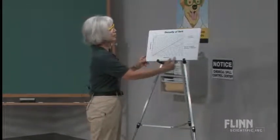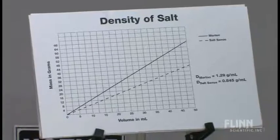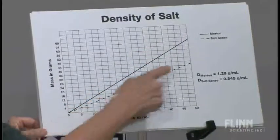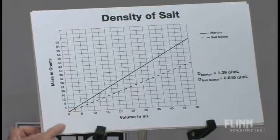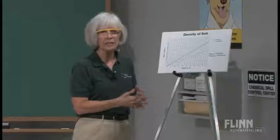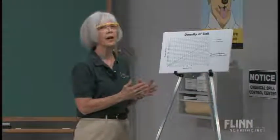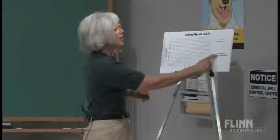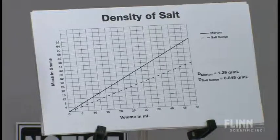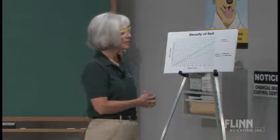They would be graphing volume on the x-axis and mass on the y-axis. The solid line represents the Morton salt and the dotted line represents the SaltSense. Students can determine the slope of each of those lines and come up with the two different densities. These may not be super accurate absolute values, but in relative terms, the density of Morton salt is observed to be 1.29 grams per milliliter, and SaltSense is 0.845 grams per milliliter — a significant difference.